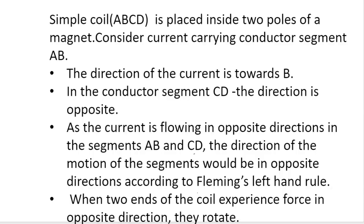Once again, point by point: A simple coil is placed inside the two poles of a magnet. Consider current-carrying conductor segment A, B — direction of current is towards B. Consider the next conductor segment C, D — here the direction of current is opposite to that of A, B. As current flows in opposite directions in segments A, B and C, D, the direction of motion of the segments would be in opposite directions according to Fleming's left-hand rule. When two ends of the coil experience force in opposite directions, they rotate. This is the DC motor working principle.